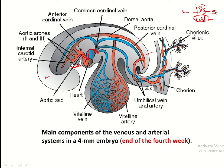This is the vitelline artery, which is arranged in the yolk sac and continues up to the dorsal aorta. Now for the venous system of the fetus — this is the venous end of the heart tube, known as the sinus venosus. Three veins drain here: first, the vitelline vein arising from the yolk sac; second, the umbilical vein arising from the placenta; and third, the cardinal vein.